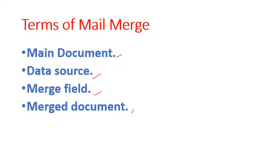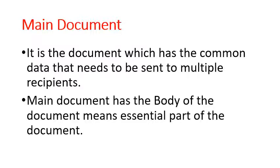Let's understand these terms one by one. First: Main Document — it is the document which has the common data that needs to be sent to multiple recipients. This means we have prepared a document with common information to be sent to different people. Main Document contains the essential body of the document.